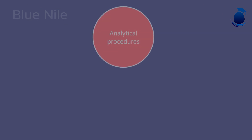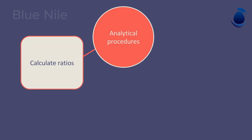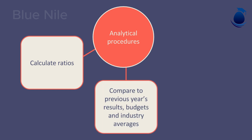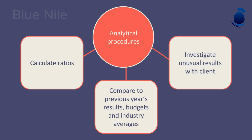For analytical procedures, the audit software is programmed to calculate ratios. At the press of a button, it can produce results needed to compare to previous years' results, budgets, and industry averages. The auditor can then investigate unusual results with the client to decide where potential material misstatements may have occurred.